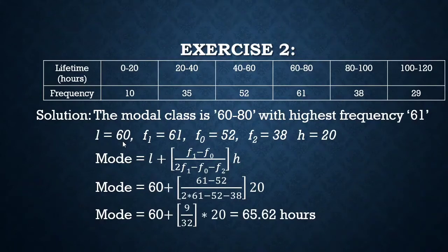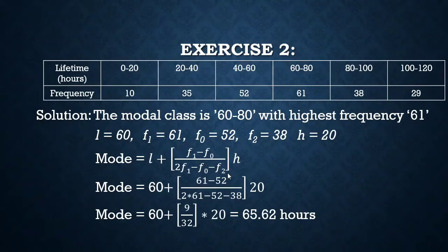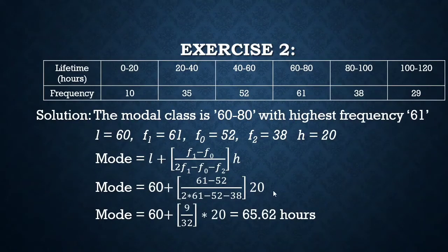For the modal class 60–80: l = 60, f₁ = 61, f₀ = 52 (preceding class), f₂ = 38 (succeeding class), and h = 20. Substituting into the mode formula: Mode = 60 + (61−52) / (2×61 − 52 − 38) × 20 = 60 + 9/32 × 20.